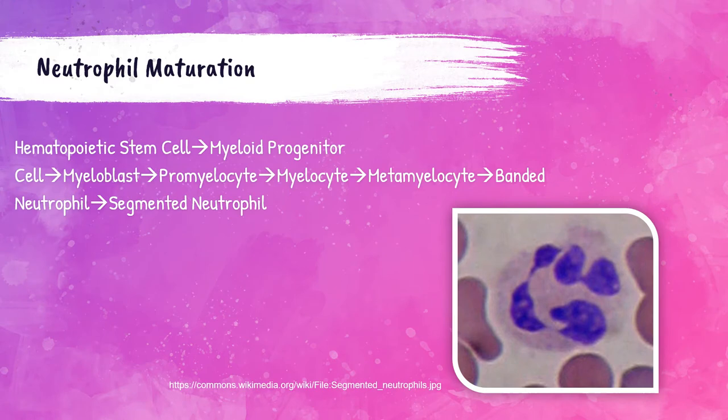To understand what a left shift is in hematology, we must first familiarize ourselves with the maturation cycle of a neutrophil, which is a leukocyte, or a white blood cell. Blood cells are created within the bone marrow, so this process starts in the bone marrow.